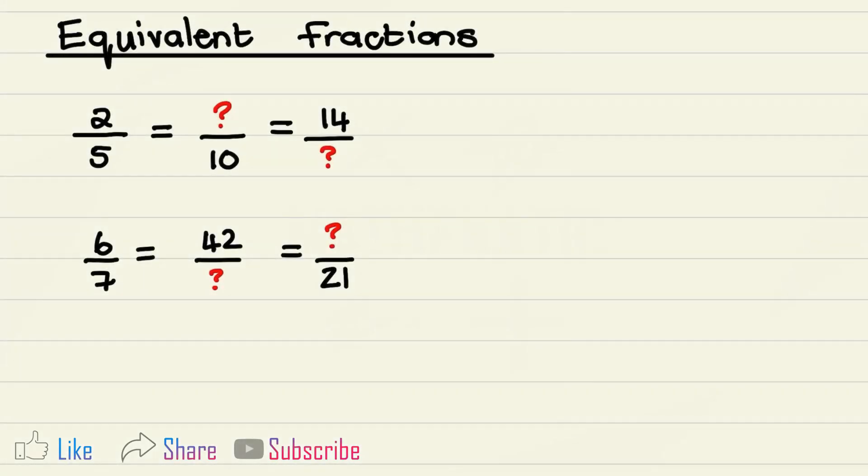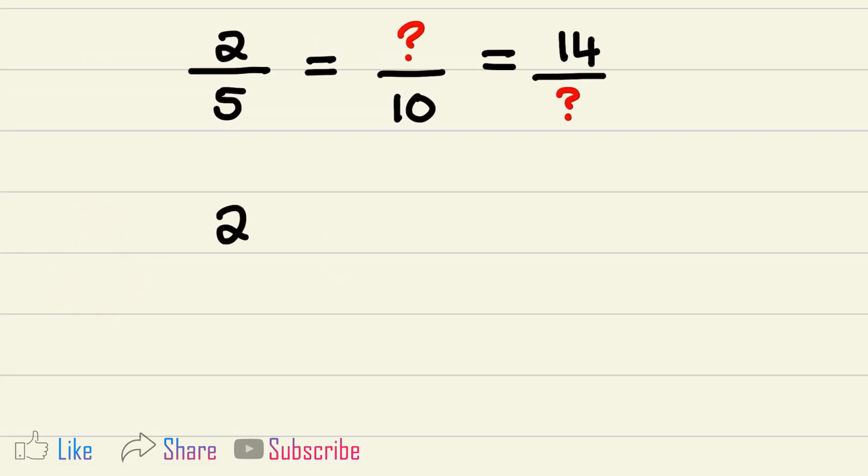Let's find equivalent fractions for 2 over 5 and 6 over 7. We are going to start with 2 over 5, and in our example we see that the denominator has changed to 10.